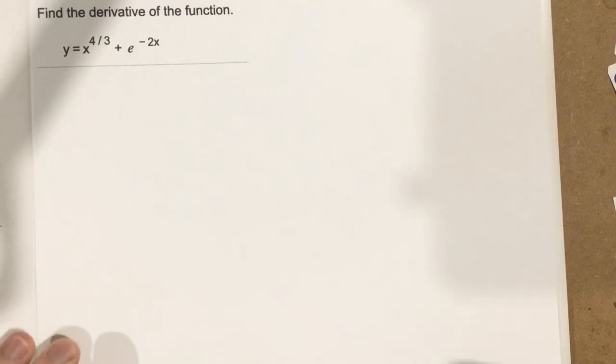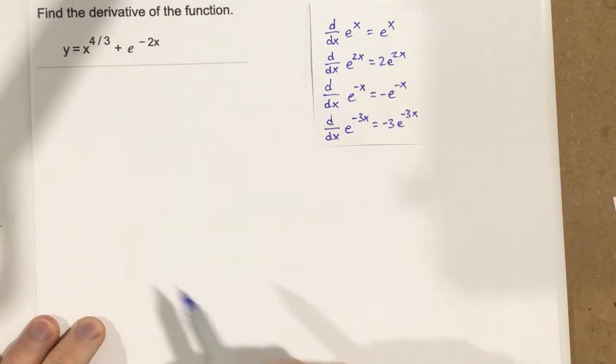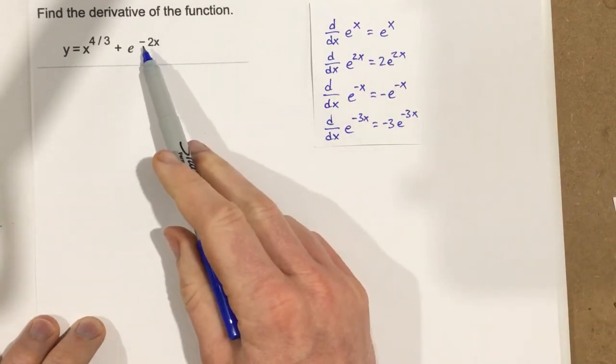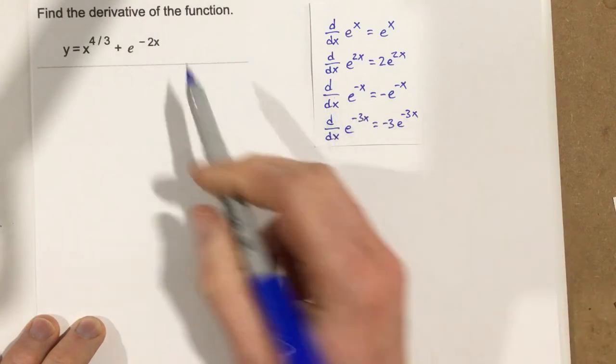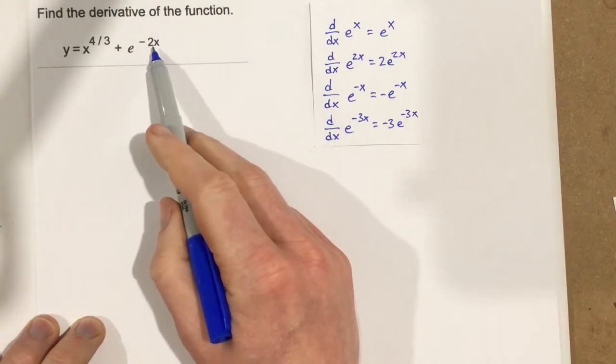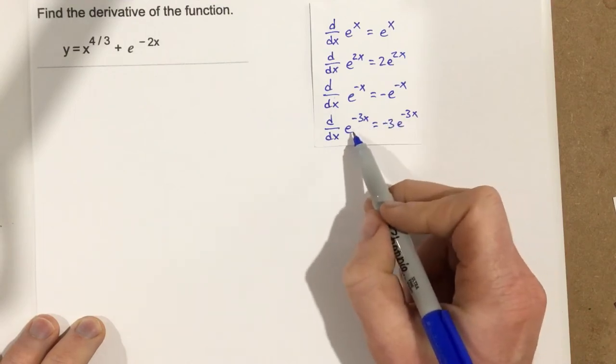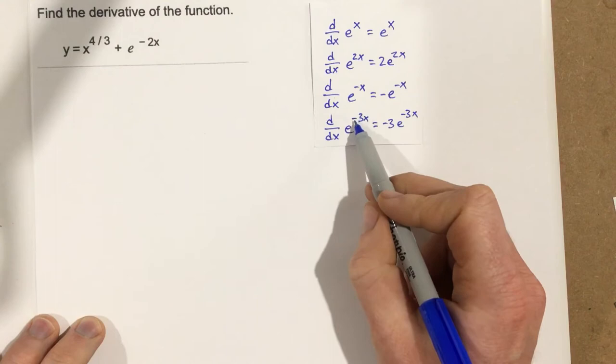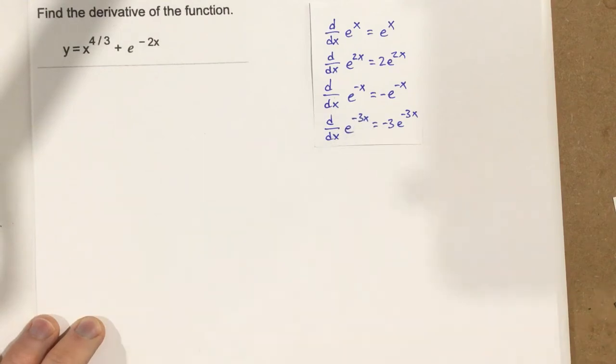So we're going to end up using a derivative of an exponential with base e, and we know that e to the negative 2x, the derivative of that's going to be negative 2 e to the negative 2x because of the rule with exponentials base e. When we take the derivatives, we take the coefficient of the exponent and bring that to the front.